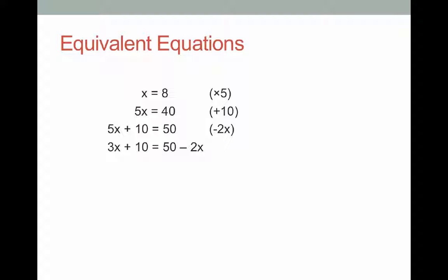Now what happens if I want to undo everything that I've done? What I'm going to have to do is complete each of those same operations, just in the reverse order, completing the reverse operation. The last operation I did was to take away 2x, so the first operation I'm going to do is the opposite of take away 2x, which is add 2x. I'm going to add 2x to the right-hand side, which will get rid of this part of the equation, and I'm going to add 2x to the left-hand side as well. When I add 2x to the left-hand side, I get 5x plus 10. And on the right-hand side, I'll get equals 50, because minus 2x plus 2x is 0. It cancels it out.